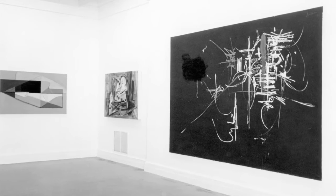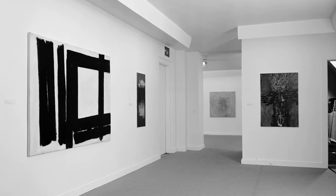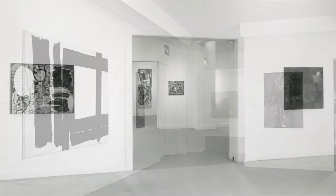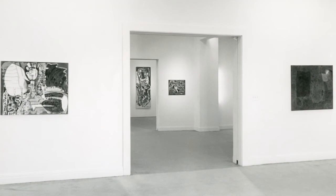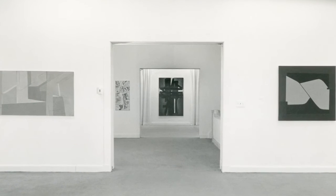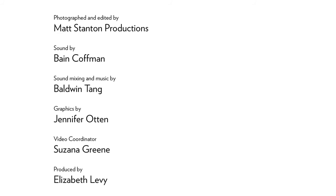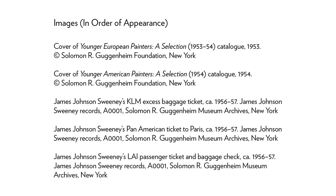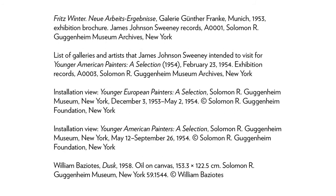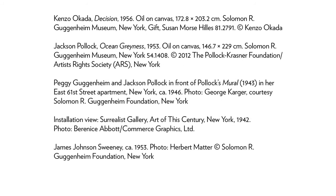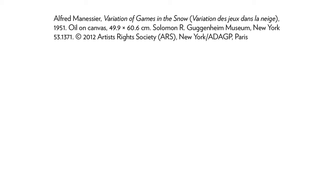Sweeney felt that these younger painter exhibitions really represented a selection of work. He knew he wasn't being comprehensive and that he was presenting a certain point of view and a certain predilection for abstraction and a certain type of painting that he was observing at the time. Sweeney referred to the painters in these exhibitions as younger painters, but he meant it in terms of their experience — he saw this group of artists as emerging artists who were just coming into their own as painters.